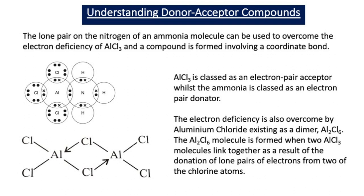That's how aluminium chloride ends up with a stable octet — it obtains a pair of electrons from another molecule via a coordinate bond. The second way that electron deficiency can be overcome is by the formation of dimers. Aluminium chloride can exist as AlCl3 or the dimer Al2Cl6, formed when two AlCl3 molecules link together through donation of lone pairs from two chlorine atoms. The two bridging chlorines each form a coordinate bond to one of the aluminiums, meaning both aluminiums have a share of eight electrons in their outer shell.